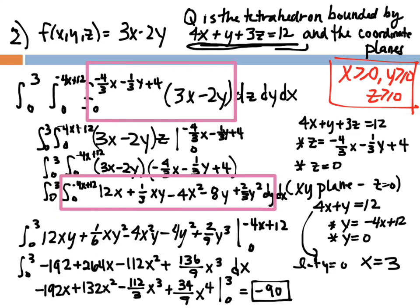Working outward, we restrict to the xy-plane by setting z = 0, giving 4x + y = 12. Solving for y gives y = -4x + 12 as the upper limit, and y = 0 as the lower limit, so that's the second integral with respect to dy. Finally, setting y = 0 gives the upper limit for x as x = 3, with x = 0 as the lower limit, so the outermost integral goes from 0 to 3.